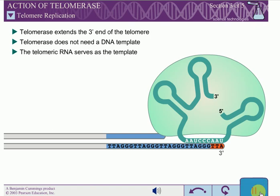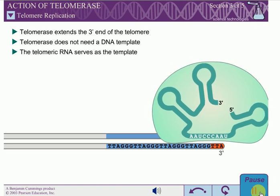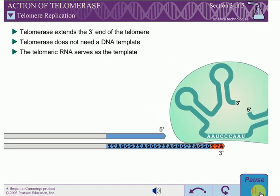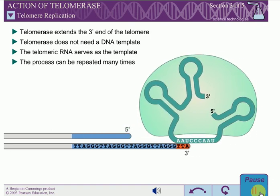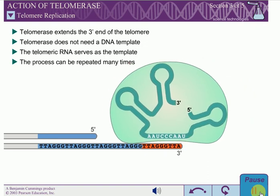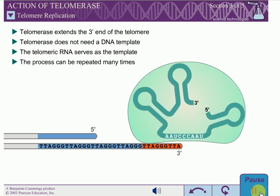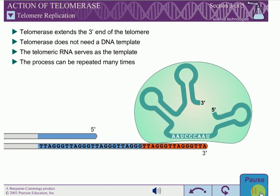After telomerase synthesizes DNA to the end of the telomeric template region, the RNA template disengages from the DNA product and re-anneals to the end of the copied DNA. This process can be repeated many times, extending the 3' end of the chromosome.